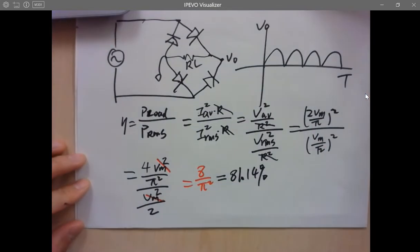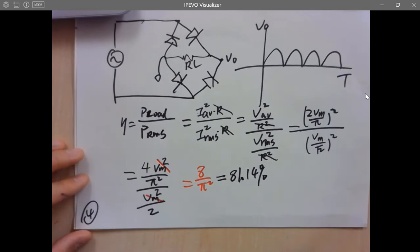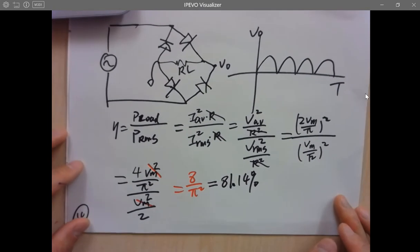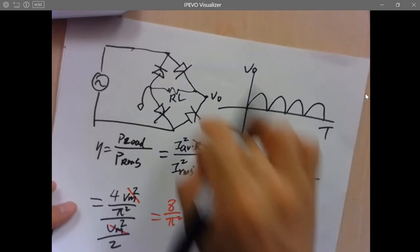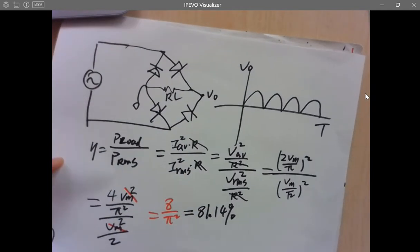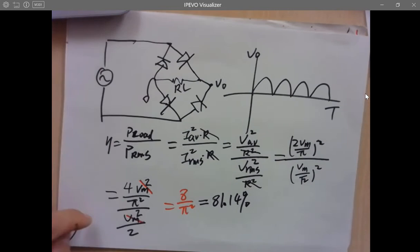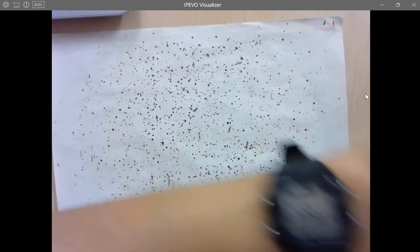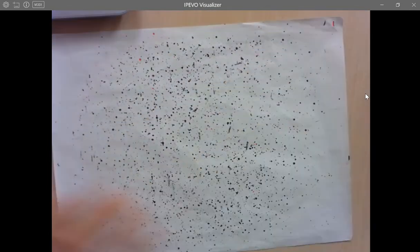Any questions so far? This is for ideal cases. So the efficiency is calculated in this way — approximately 81.14%. Now let's look at the PIV for these two structures, starting with the center-tapped one.